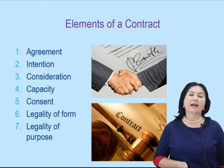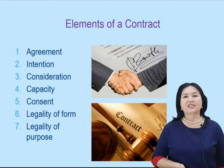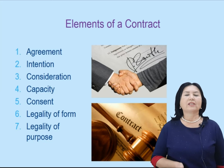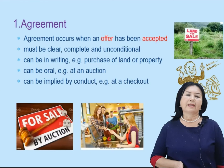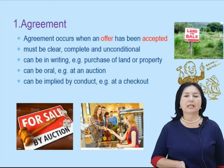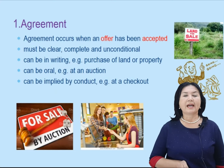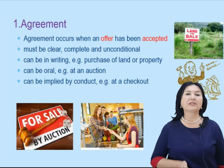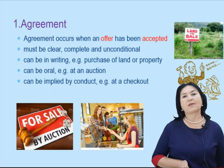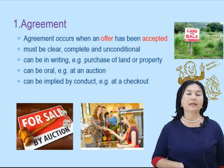Elements of contract are divided into some. They are: agreement, intention, consideration, capacity, consent, legality of form, and legality of purpose. Let's discuss these elements one by one. First element of contract is agreement. Agreement occurs when an offer has been accepted. Agreement must be clear, complete, and unconditional. Agreement can be in writing — for example, purchase of a land or property. Agreement can also be oral — for example, at an auction.